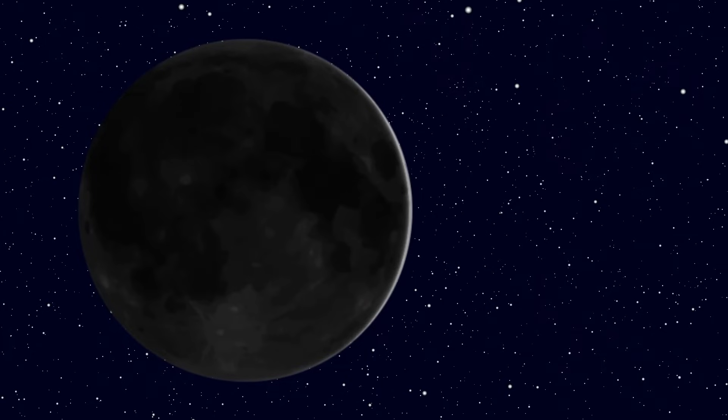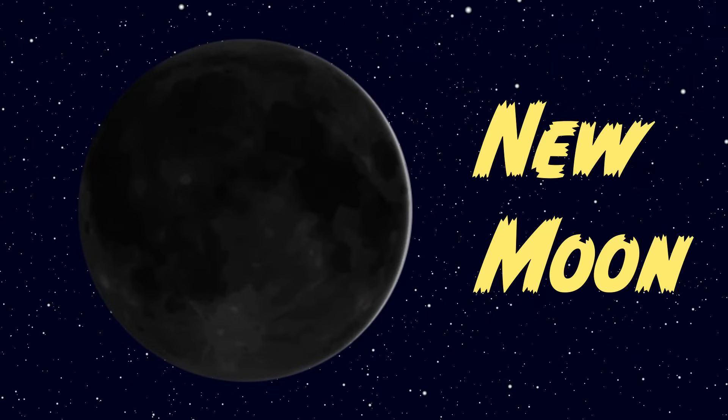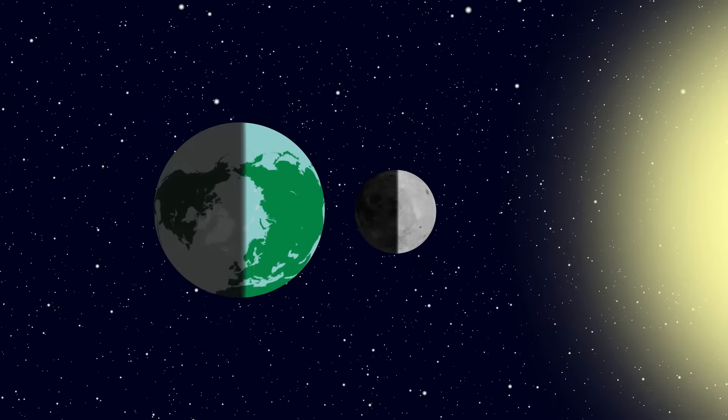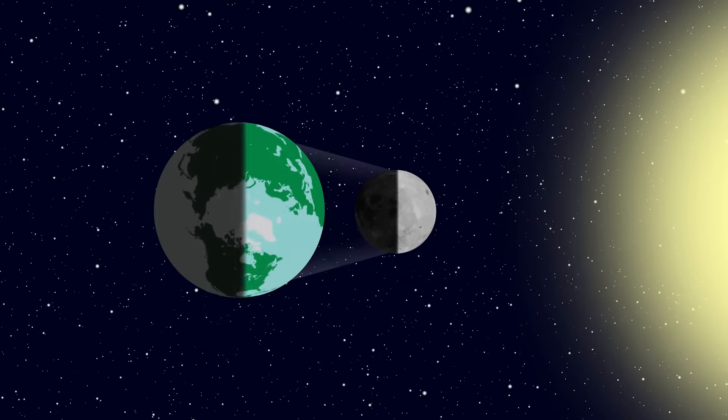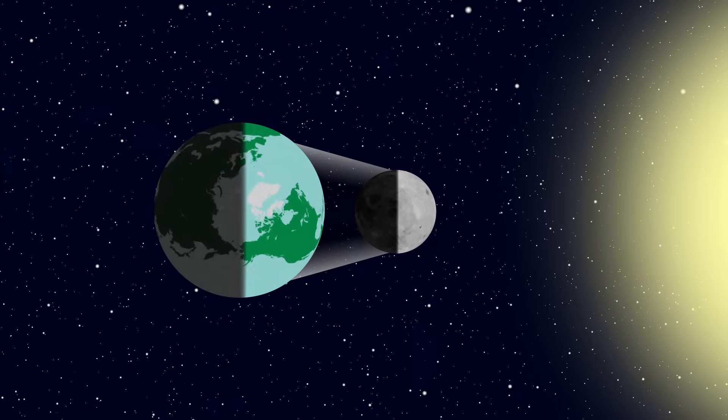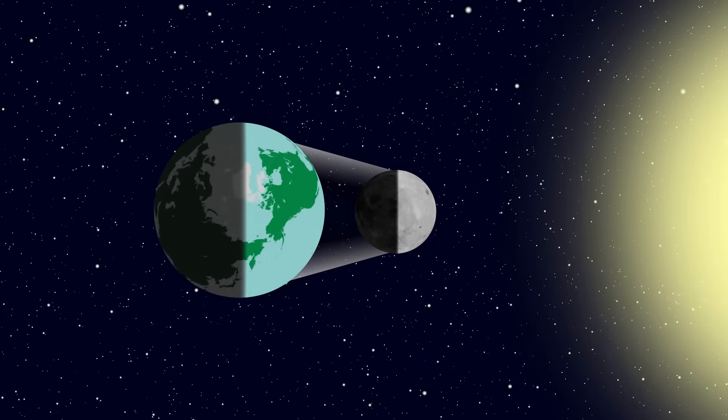The first phase is called the new moon, which takes place when the moon is located between the Earth and the sun in space. We're basically looking at the back of the moon, and for that reason we only see the dark half. The other half is still lit, it's just facing the sun so we don't see it.